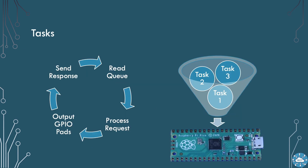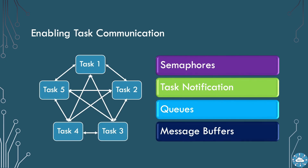FreeRTOS gives us the ability to program multiple tasks with their own executing loops, to run all of these tasks on the Raspberry Pi Pico, letting FreeRTOS share the processing time between these tasks. We explore how to get the tasks to communicate using FreeRTOS Kernel semaphores, task notification, queues, and message buffers.